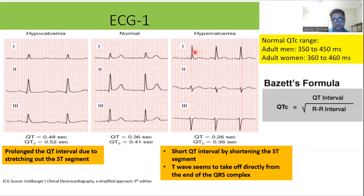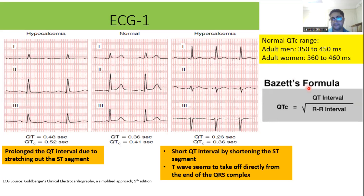Before understanding what is a short or long QT, you need to know the normal QT interval. In adult men, the normal QT interval is between 350 to 450 milliseconds, whereas in adult women it's around 360 to 460 milliseconds.